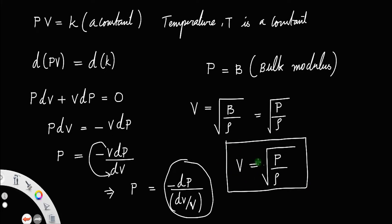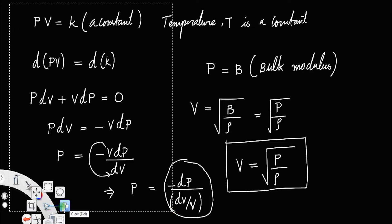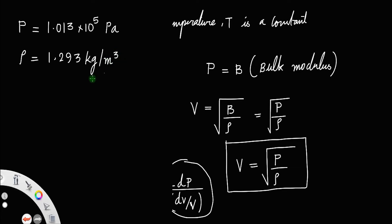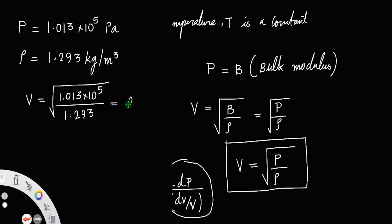We can check whether this theoretical value actually fits the real case scenario. The experimental value of the velocity of sound waves is 332 meters per second. Applying Newton's formula with atmospheric pressure equal to 1.013 × 10⁵ Pascal and density of air equal to 1.293 kg/m³, the velocity comes out to be 280 meters per second.